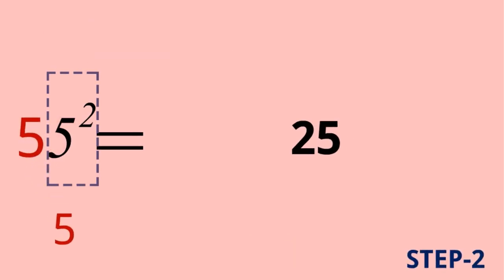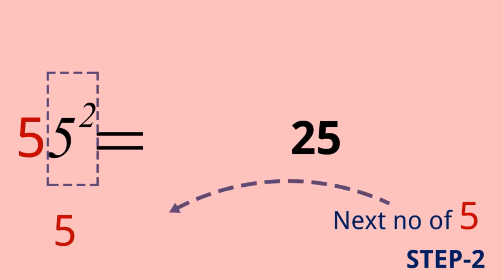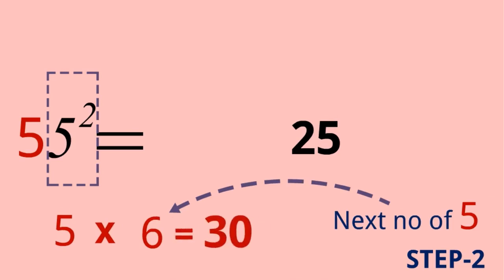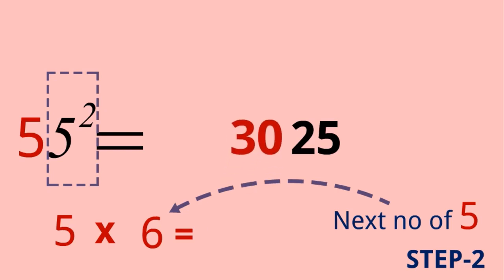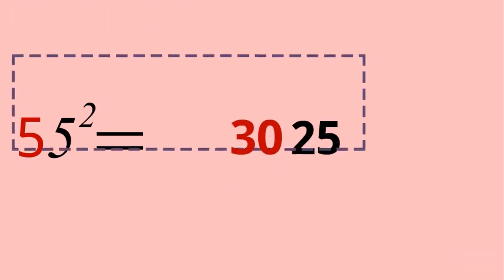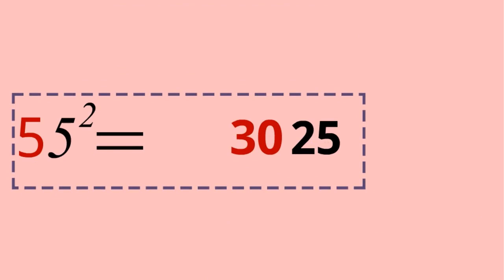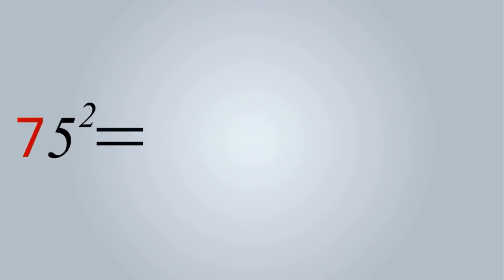Step two: 5 is here and the next number of 5 is 6, so we multiply 5 and 6. 5 multiplied by 6 is equal to 30, and this 30 will be shifted to here. So it becomes 3025. We can say 55 squared is equal to 3025.